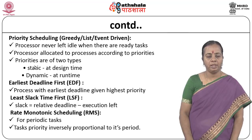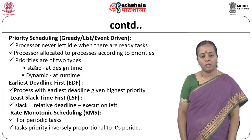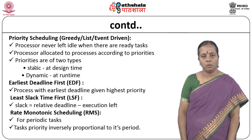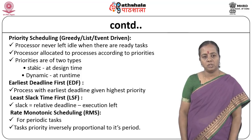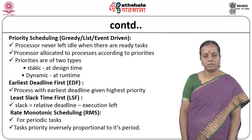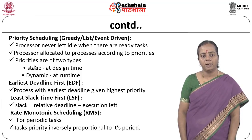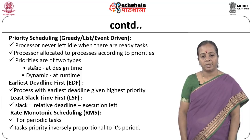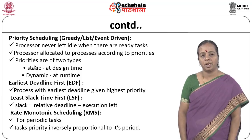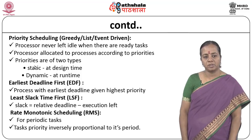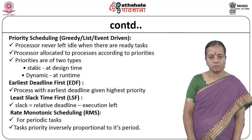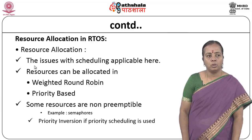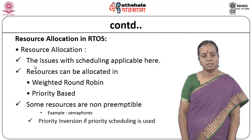In priority-based scheduling, the processor is never left idle when there are ready tasks. Processes are allocated according to priorities. There are two kinds: static priority and dynamic priority. EDF (Earliest Deadline First) is a dynamic priority scheduling, whereas rate monotonic is a static priority approach. The next major task done by RTOS is resource allocation.